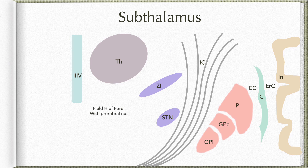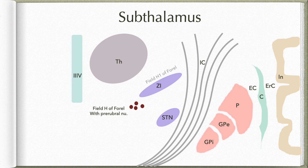Medial to the zona inserta, we have a region known as field H of Forel, within which a collection of neurons forms the prerubral nucleus. There is also field H1 of Forel, located dorsal to the zona inserta, and field H2 of Forel, located on the ventral aspect of the zona inserta. These three fields of Forel are regions through which several important fiber bundles pass.